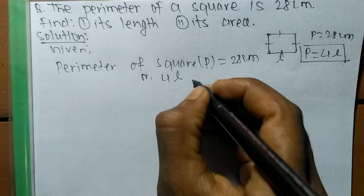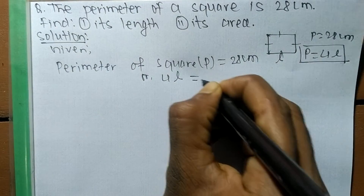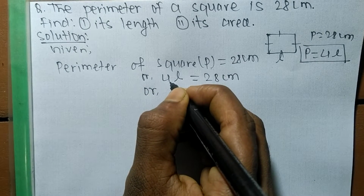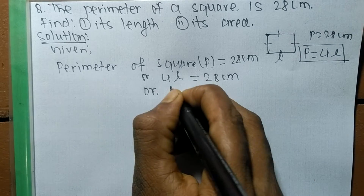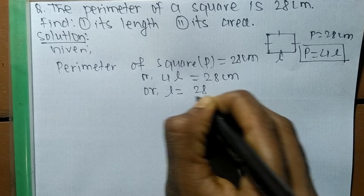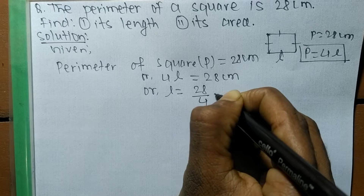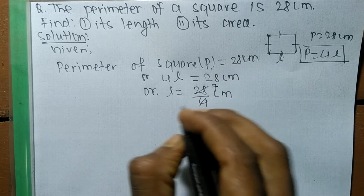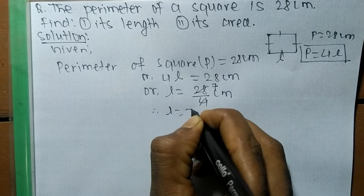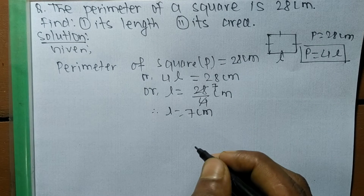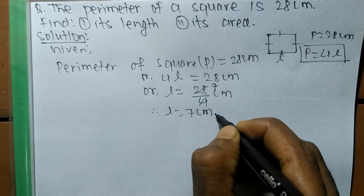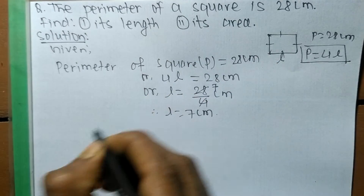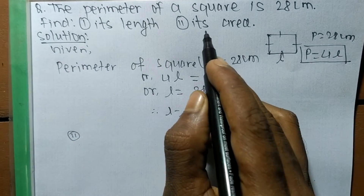We can write 4L = 28 centimeters. The 4 is on the multiplication side, so when changing sides it becomes division: L = 28 ÷ 4 = 7. So L is equal to 7 centimeters. The length of each side is 7 centimeters — that is our first answer.